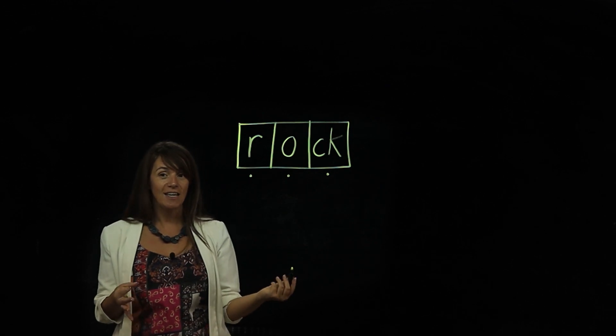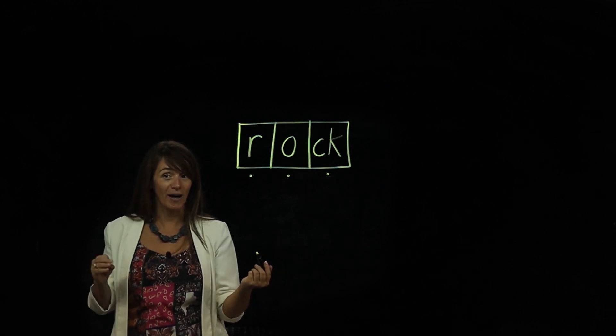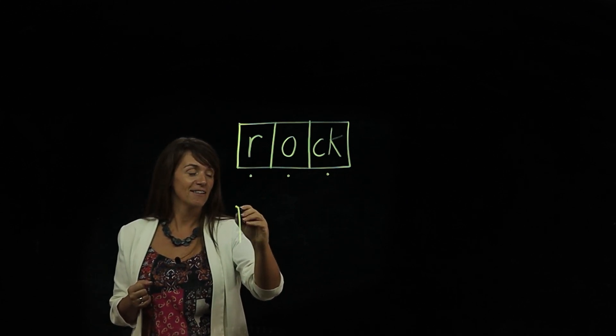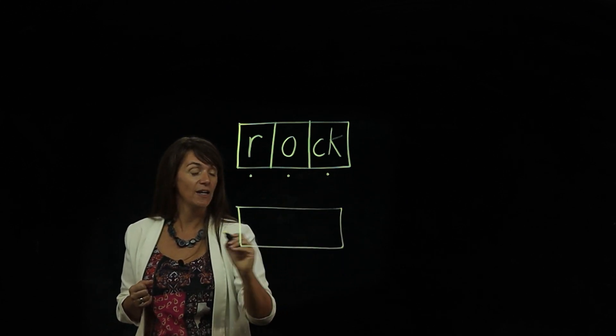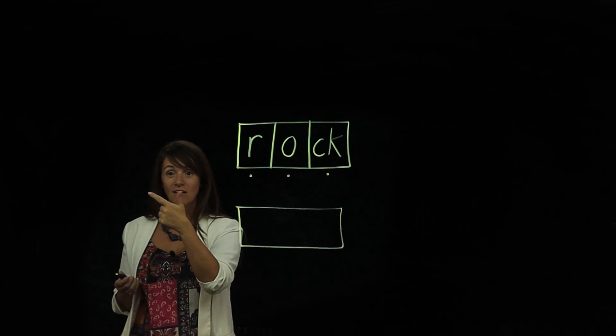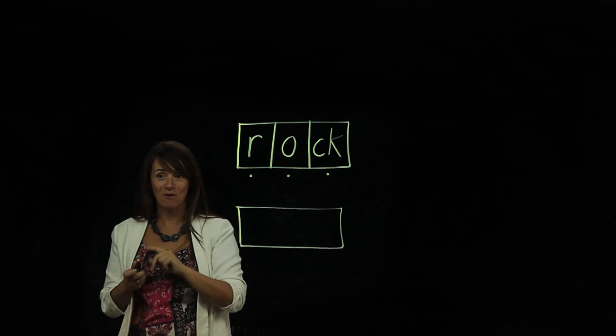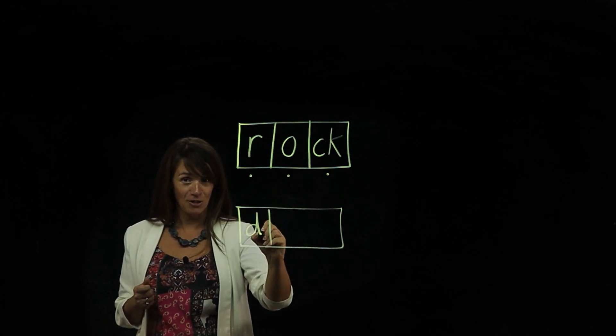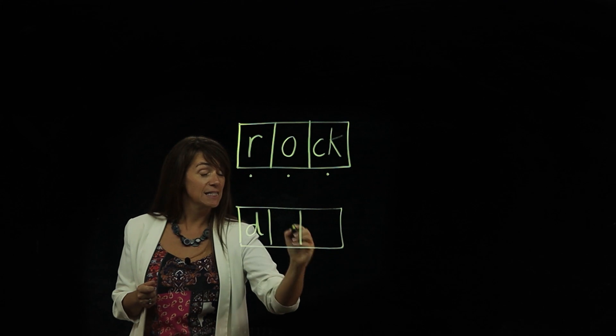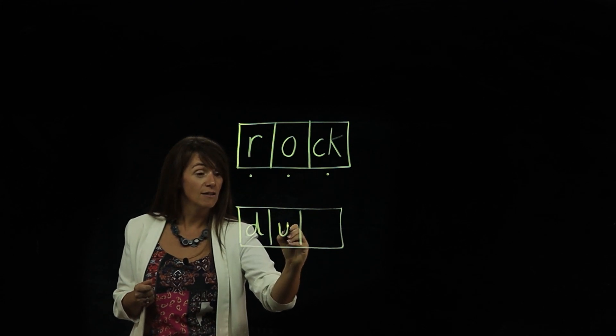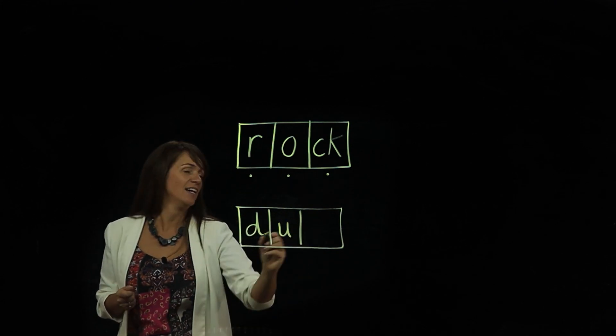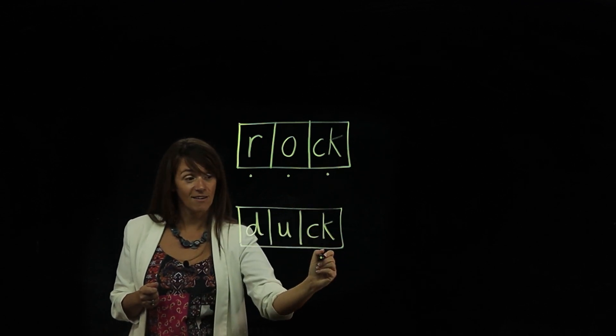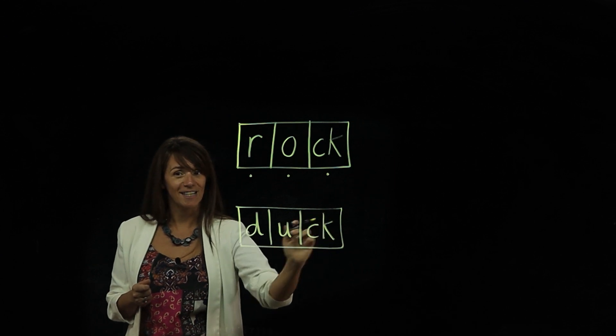Our next word is duck. Quack, quack, quack, the animal, duck, the bird. How many sounds can you hear in duck? D, u, ck. Three again, well done. So our first sound is d, very good. Our middle sound is u, uh, up, umbrella. And our final sound, again, like in rock, is ck with the two letters together.